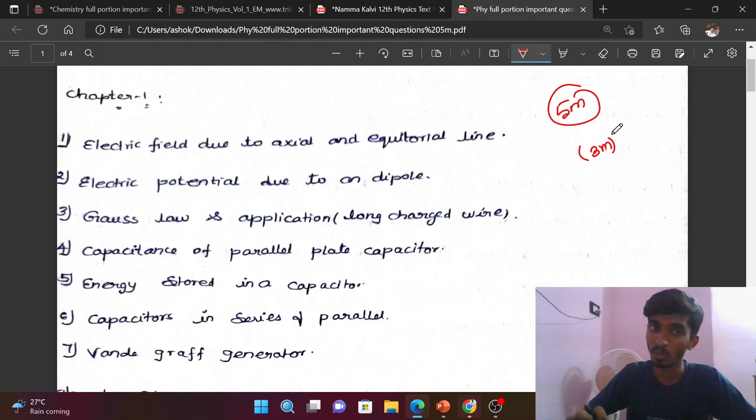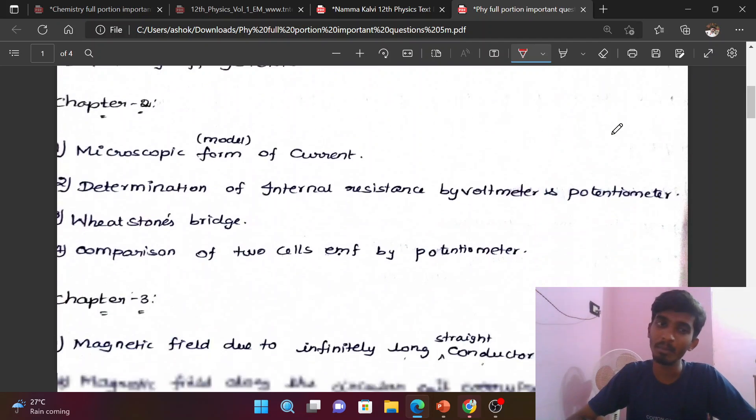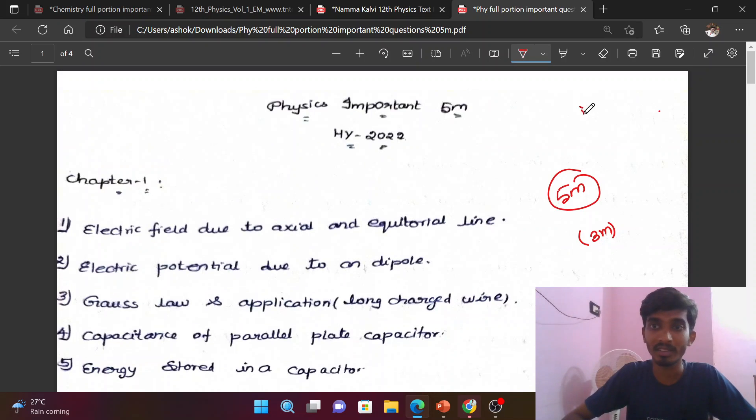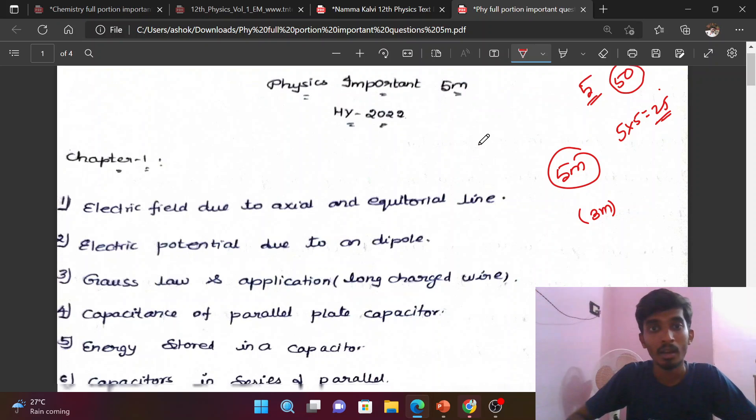There will be 5 questions total, each worth 5 marks, making 25 marks maximum. Let's start with Chapter 1.